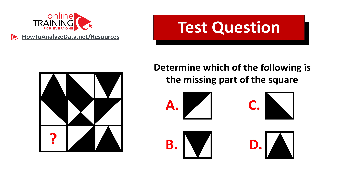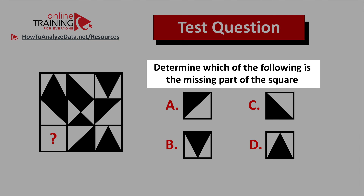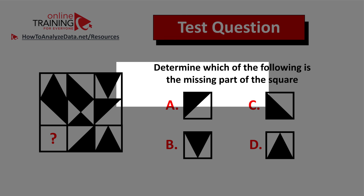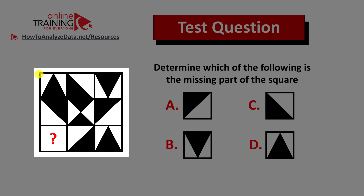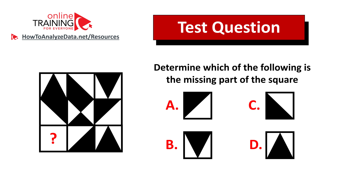Here is a question from the real test — I have full confidence you can solve this challenge. Please post your answer in the comment section so I can share feedback. Determine which of the following is the missing part of the square. You're presented with a three by three square with separate small squares inside. You have four choices — A, B, C, and D — which all seem valid. Post your answer and rationale in the comments; I'll also post a detailed answer in future videos.